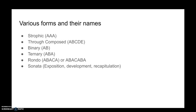Ternary form is where you have an A part, then a B part, which then returns to the A part — three parts in total. Quite often when we return to the A part after the B section, there may be some ornamentation or slight variation. The melody will broadly be the same as first heard, but there might be a slight variation — sometimes called the A1 part.